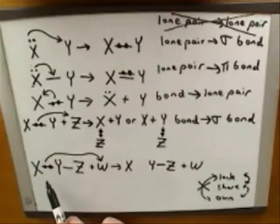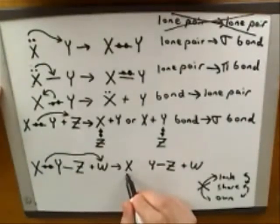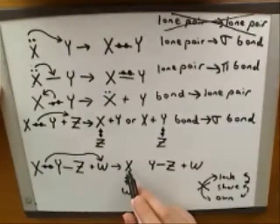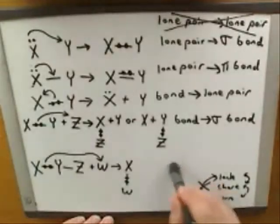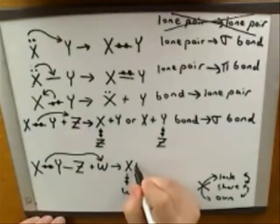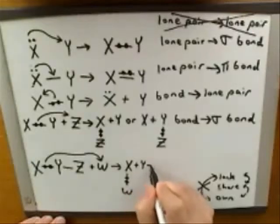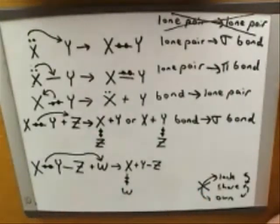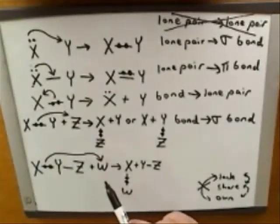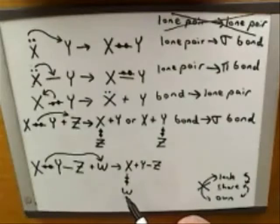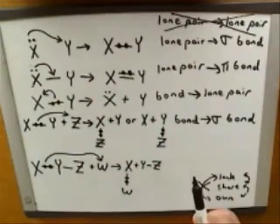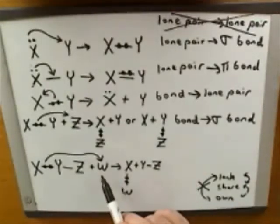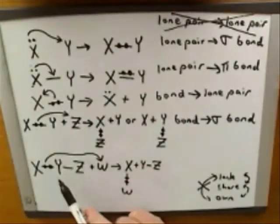Originally X and Y were sharing the pair of electrons. So it's possible that W could end up sharing the electrons with X, since X was already one of the atoms that was sharing the electrons. And it's again perfectly possible that W is going to form a bond with the other atom that was sharing the electrons originally, which was Y.